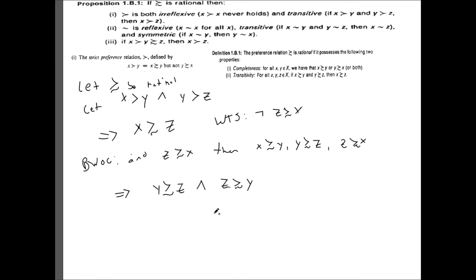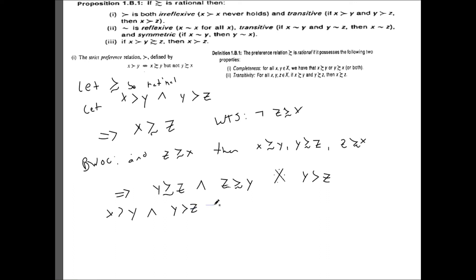This is a contradiction, because we have the assumption that y is strictly preferred to z. The definition of y being strictly preferred to z requires y weakly preferred to z and not z weakly preferred to y — but we derived both, which is a contradiction. So this tells us that x strictly preferred to y and y strictly preferred to z implies not z weakly preferred to x, which means the strict preference relation is transitive.